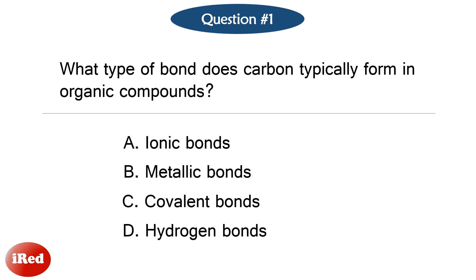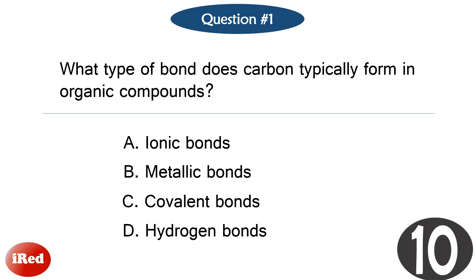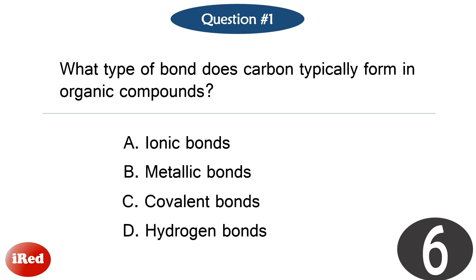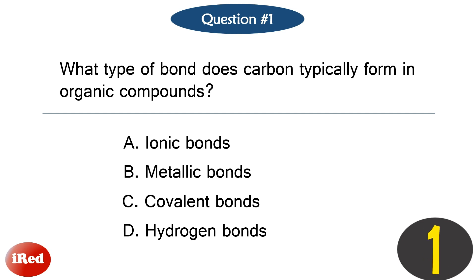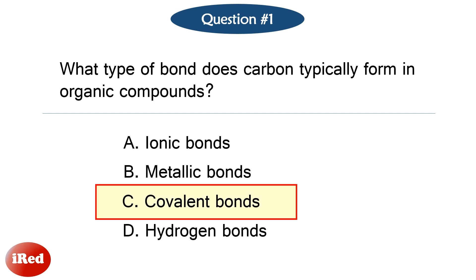Question number 1: What type of bond does carbon typically form in organic compounds? The correct answer is letter C, covalent bonds.